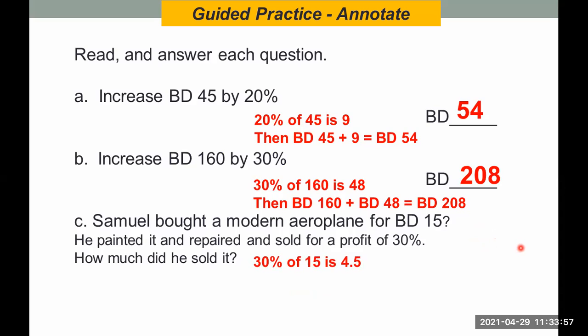After getting 4.5, we added it to 15 BD. Now, he sold it for 19.5 dinar. So that means Samuel sold it for 19 dinar and 500 fils. See? This is business. This is how we're going to earn money in doing business. Buy an item, put an increase of percentage, and then presto, you will get extra money. Got it?